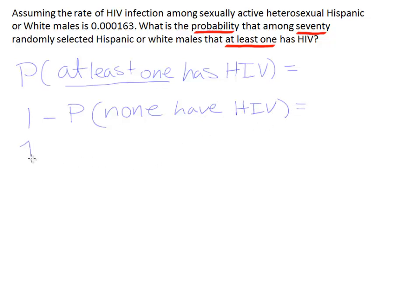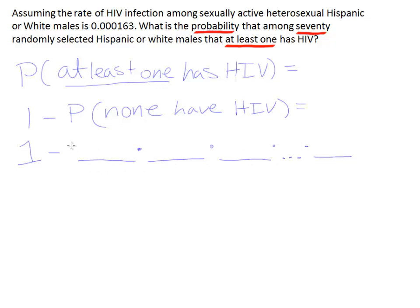The one is just a constant, so we'll rewrite that. To get the probability that none have HIV, we're going to think about the fact that we'll have 70 probabilities multiplied together — a probability for each person selected. We can't write out all 70 spaces, so I'll use dot dot dot to indicate this goes on 70 times. Just remember that we have 70 of these spaces in theory.